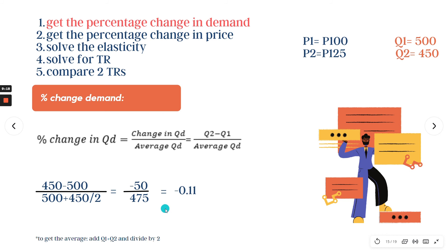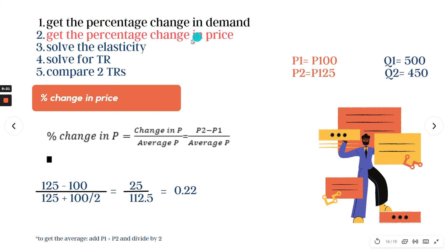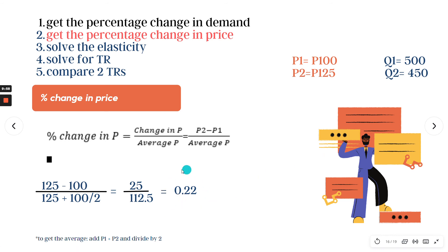Step two: solve for the percentage change in price using (P2 − P1) over average P, where average P = (P1 + P2) / 2. Substituting: (125 − 100) divided by (125 + 100) / 2. That is 25 divided by 112.50, which equals approximately 0.22. This is our percentage change in price.